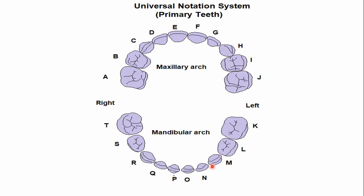In the universal notation system for deciduous dentition, the alphabets continue in a clockwise direction. The mandibular lateral incisor of the left side is N, and the mandibular lateral incisor of the right side is Q.